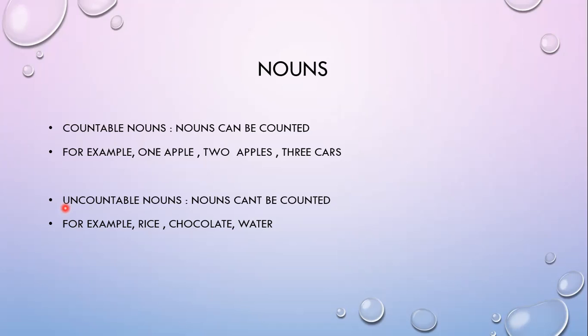Uncountable nouns هي الأسماء غير المعدودة — nouns that can't be counted. مثلاً ما بقدر أعد الرز، ما بقدر أعد المي. ما بقدر أحكي one water، مية، ميتين، ثلاث ميات. أنا ما بحكي عن أنينة المي أو كاسة المي، أنا بحكي عن المي نفسها. Chocolate — ما بحكي عن حبات الشوكولاتة. هلأ كحبات بقدر أعد الحبة، بس نفس الشوكولاتة ما بقدر أعدها — يعني بقدر أحط حبتين تفاح، بس الشوكولاتة إذا كانت صايحة ما بقدر أعدها.